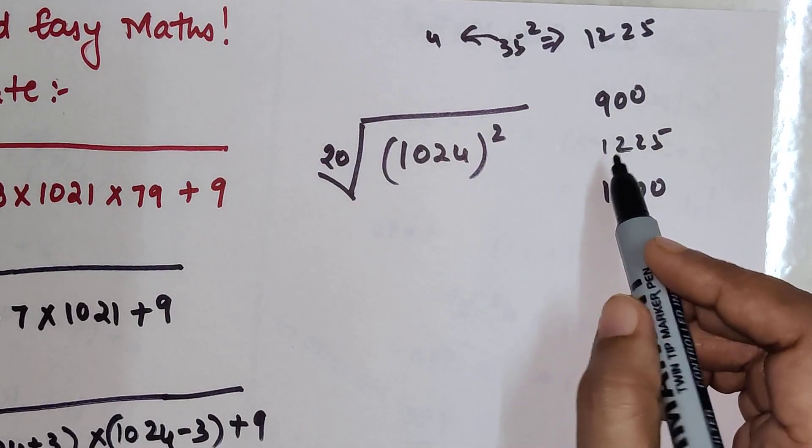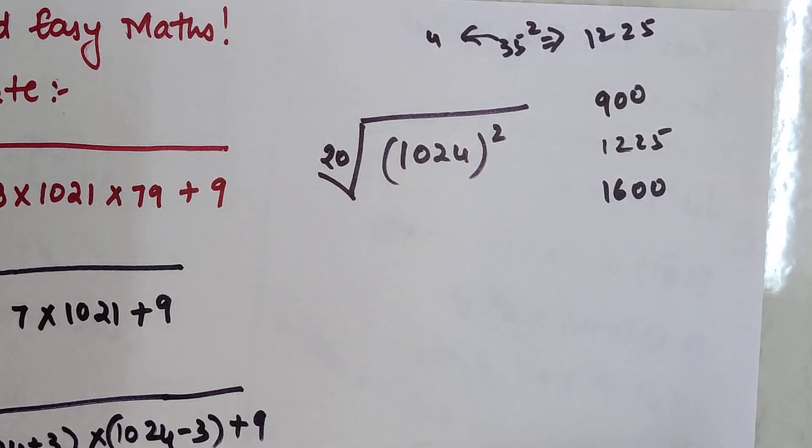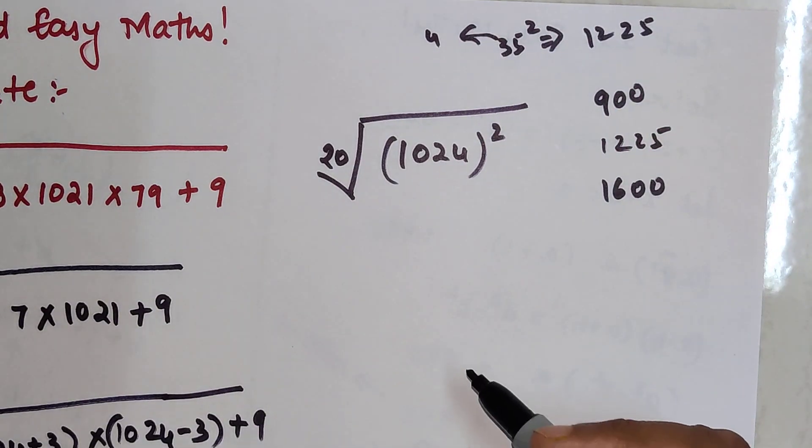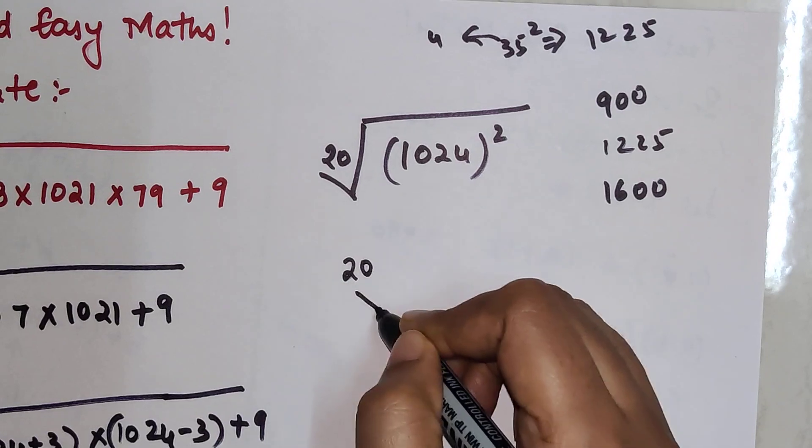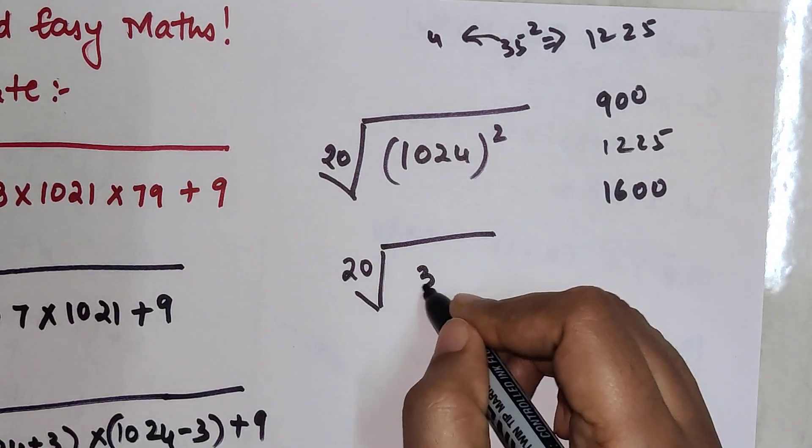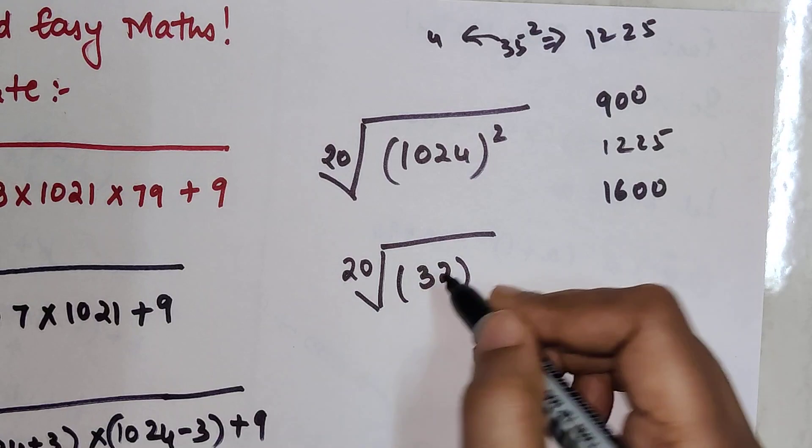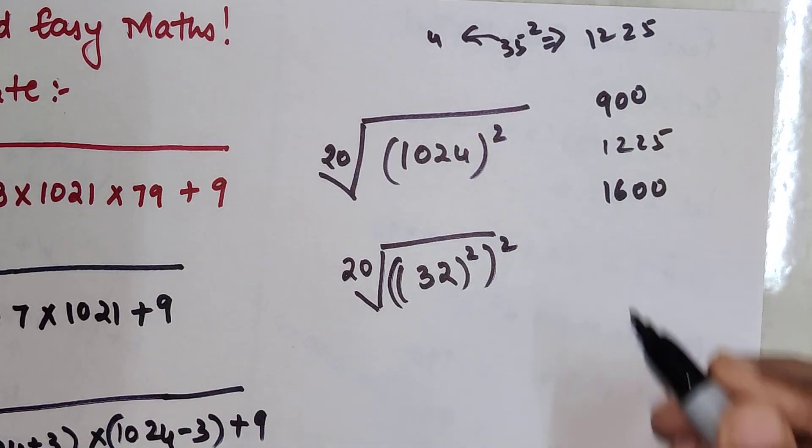Now 1024 is even less than 1225. So we will check and you will realize that this is nothing but 32² the whole square.